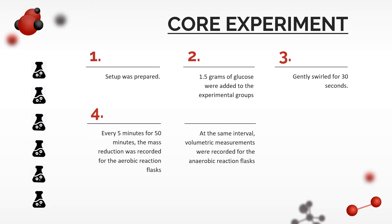After which, the mass reduction was recorded for the aerobic reaction flasks every 5 minutes for 50 minutes. Before each measurement, the flasks were swirled for 3-4 seconds to release the dissolved gas. At the same interval of every 5 minutes for 50 minutes, the volumetric measurements were recorded for the anaerobic reaction flasks. Again, the flasks were swirled for 3-4 seconds before each measurement. To process the data, control measurements were subtracted from the testing measurements, and the quantities were converted to millimole of carbon dioxide.